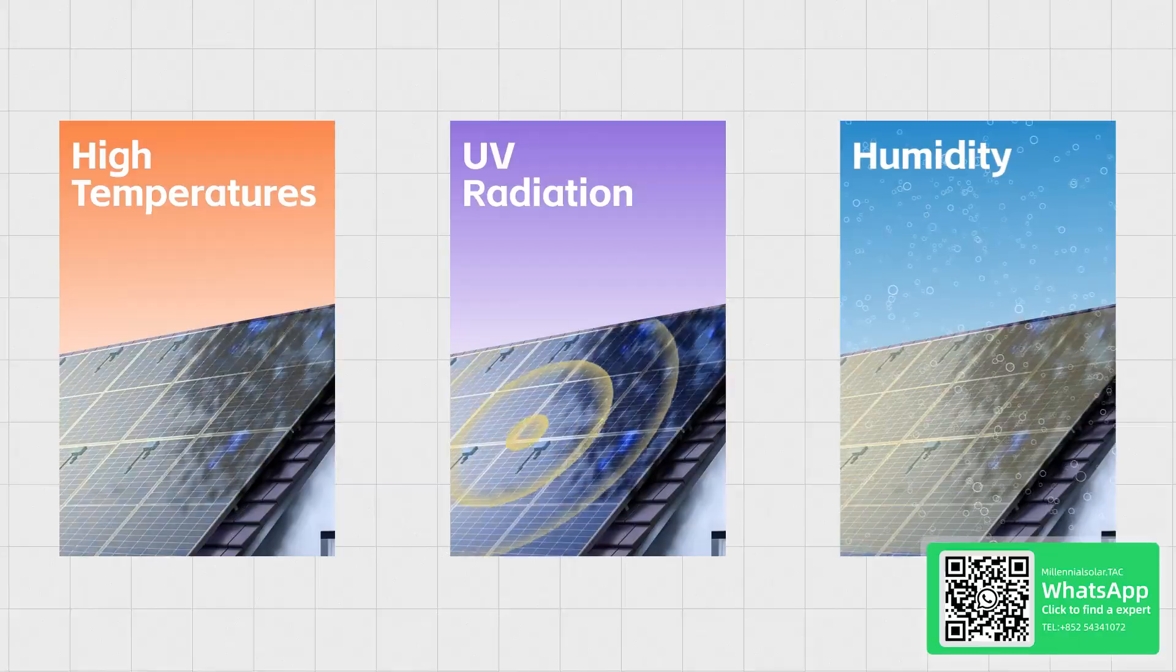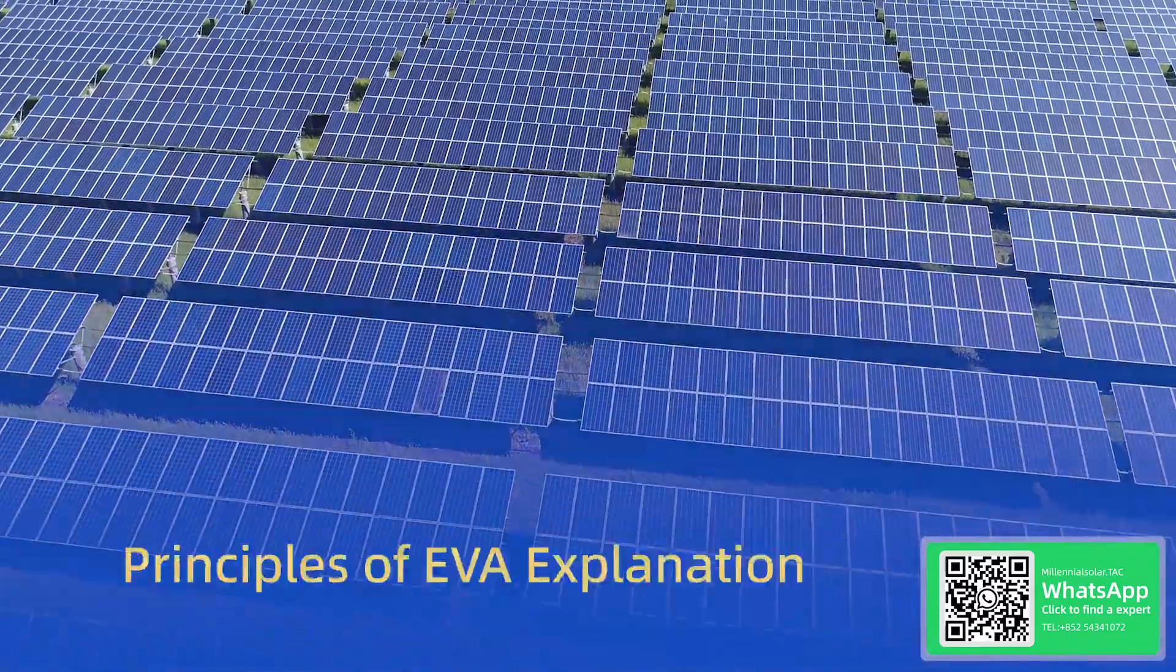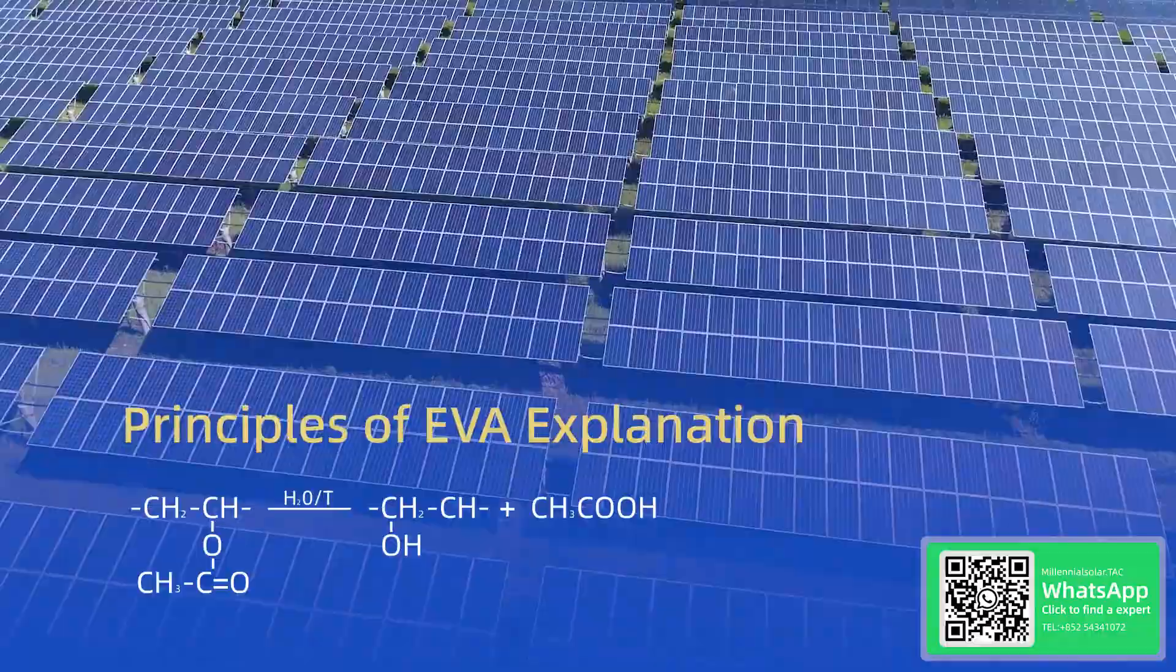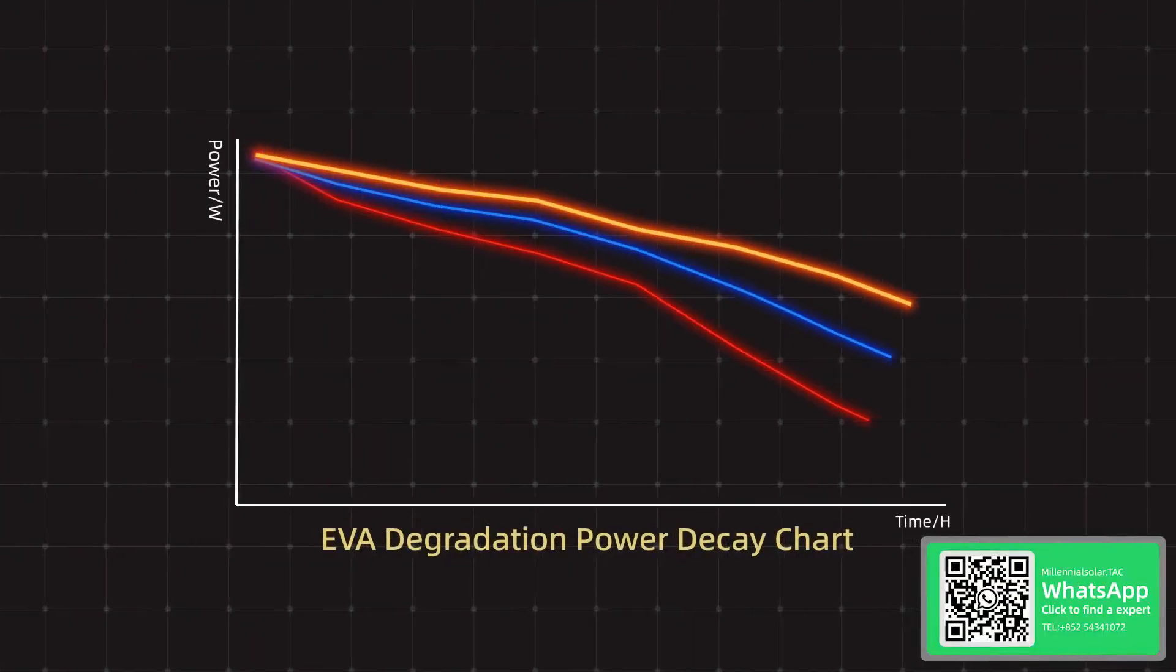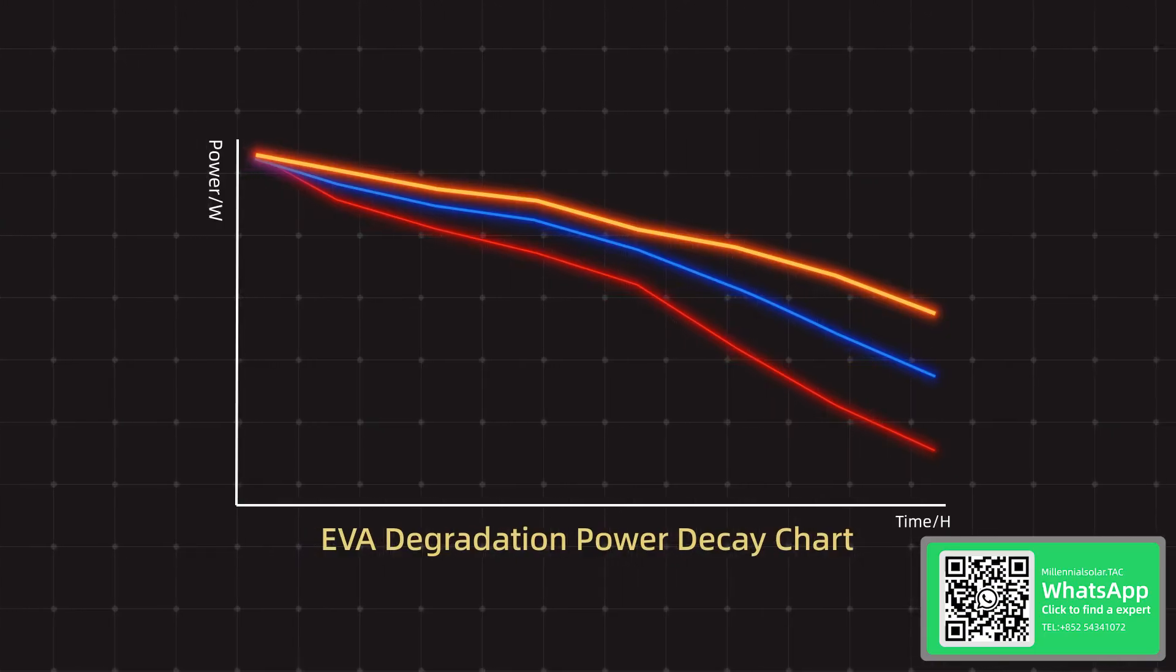If moisture penetrates the PV module, EVA can decompose and produce acetic acid, which corrodes the silver electrodes of the cell grid lines. This is one of the reasons for module power degradation, reducing the power generation capacity of PV panels.